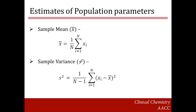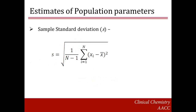Variance is always positive. A low variance indicates the data points tend to be very close to the mean. A high variance indicates the data points are spread out over a large range of values. Standard deviation is defined as the square root of the variance. Just like variance, standard deviation measures the dispersion of values making up the distribution from the mean, and is always positive. The sample standard deviation, s, is computed as the square root of the sample variance.